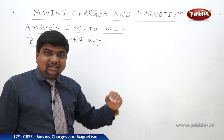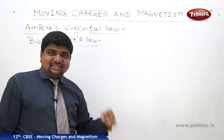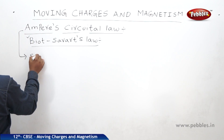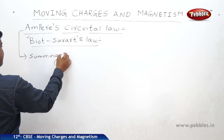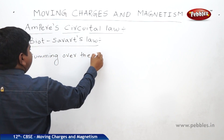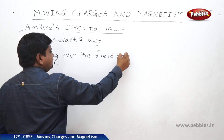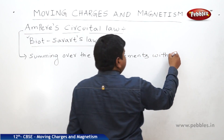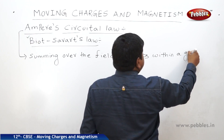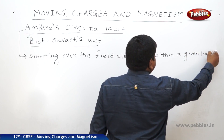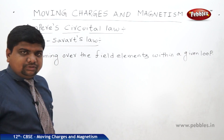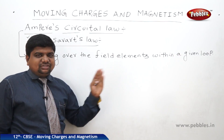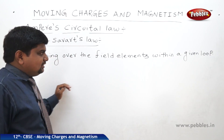How do we find out this magnetic field? By summing over the field elements within a given loop — that means we should find out the integration. The integral B·dL tells us how much field we get, and those values we should find out with respect to the region.